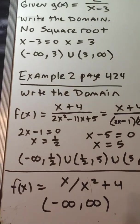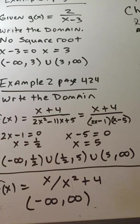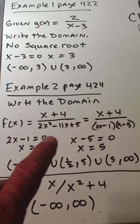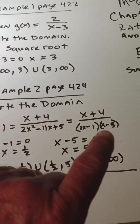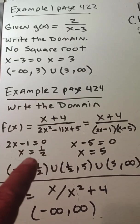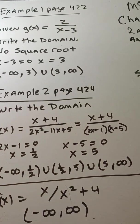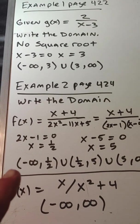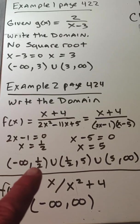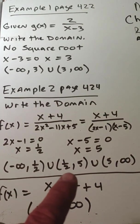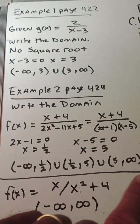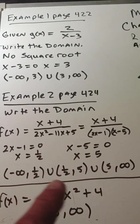In example 2, we write the domain of f(x) = (x + 4) / (2x² − 11x + 5). First, we factor the denominator and get (2x − 1)(x − 5). No square root, so we don't worry about that. Setting each factor equal to zero: 2x − 1 = 0 gives x = 1/2, and x − 5 = 0 gives x = 5. So the domain is all real numbers except 1/2 and 5. In interval notation: (−∞, 1/2) ∪ (1/2, 5) ∪ (5, +∞).